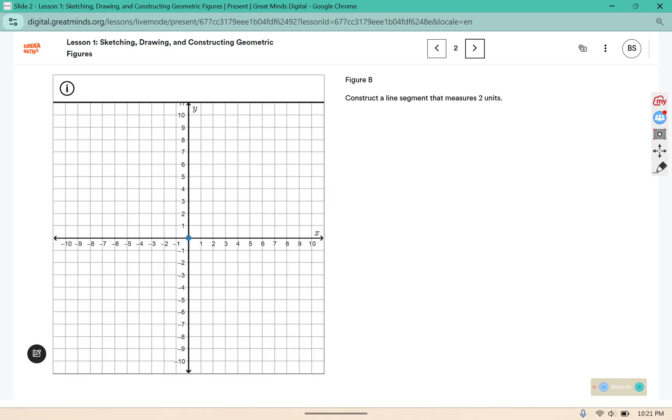However, in B it says construct a line segment that measures two units, so we want it to be two boxes wide. It could also go two up, two down, or two to the left, but we want it to be two long.